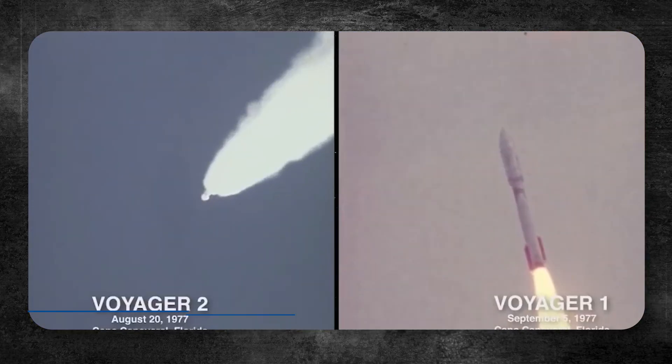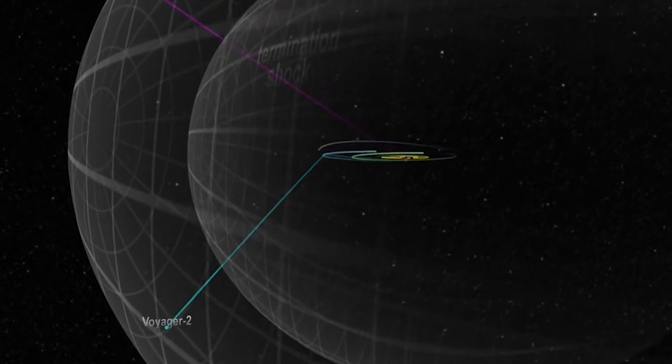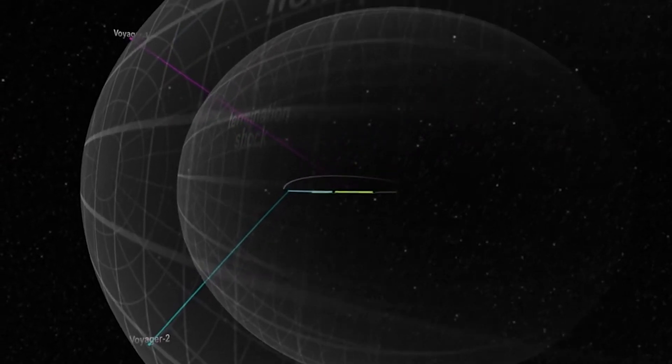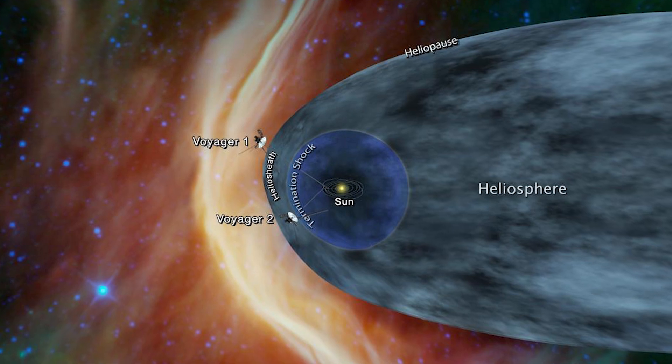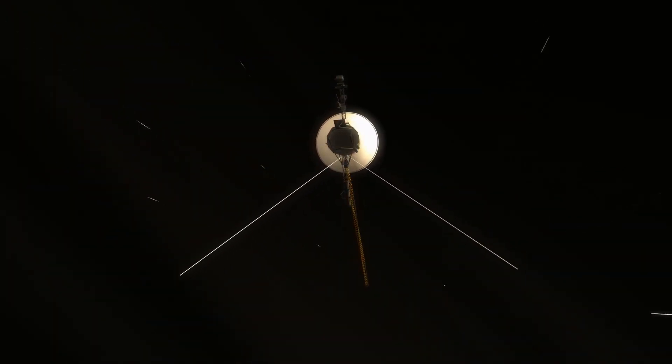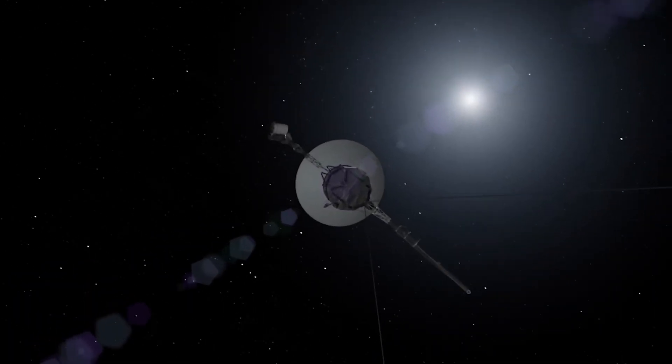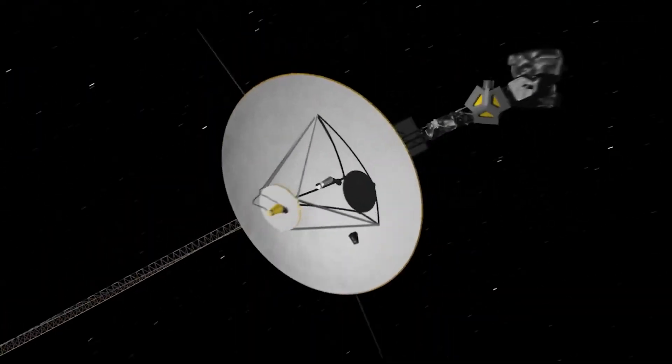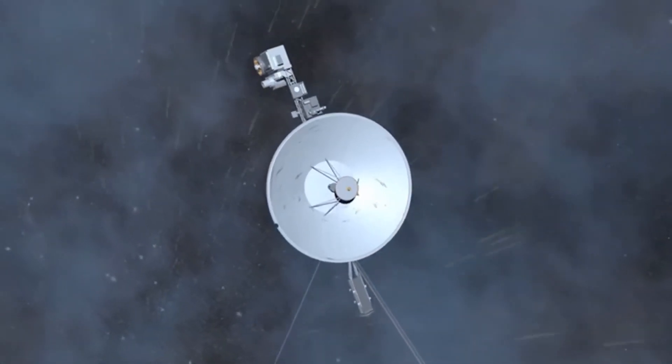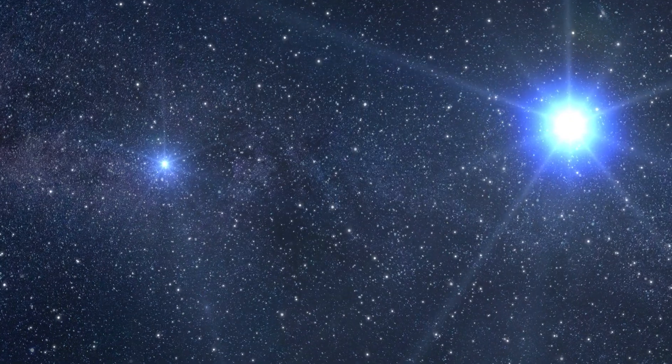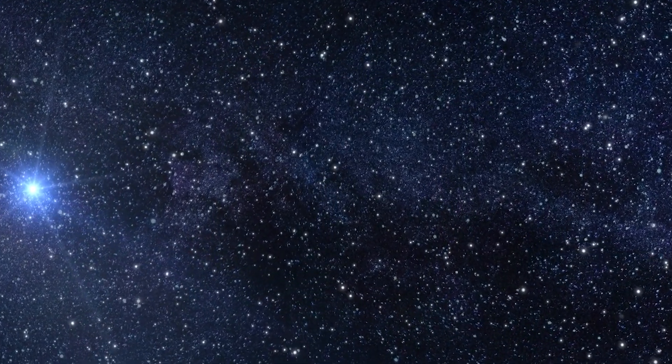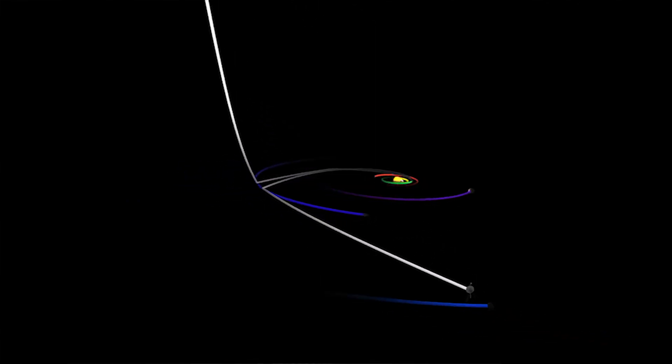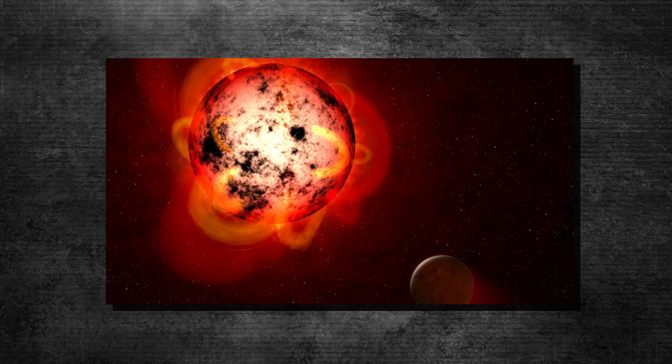These aging probes, launched in 1977, were originally meant to explore the outer planets. Yet they far exceeded those goals, pushing into interstellar space. Voyager 1 is moving at 17 kilometers per second and will eventually pass near a star in the constellation Camelopardalis in about 40,000 years. Voyager 2, on a different path, will pass by a star called Ross 248 and later near Sirius, the brightest star in our sky.